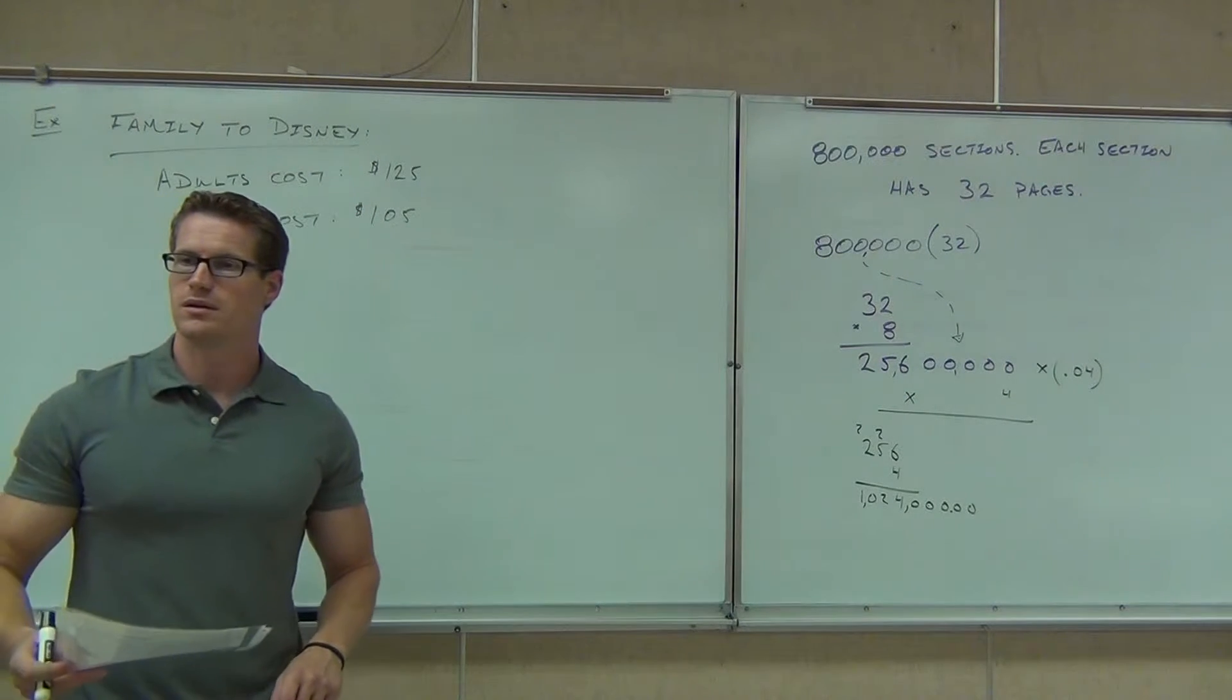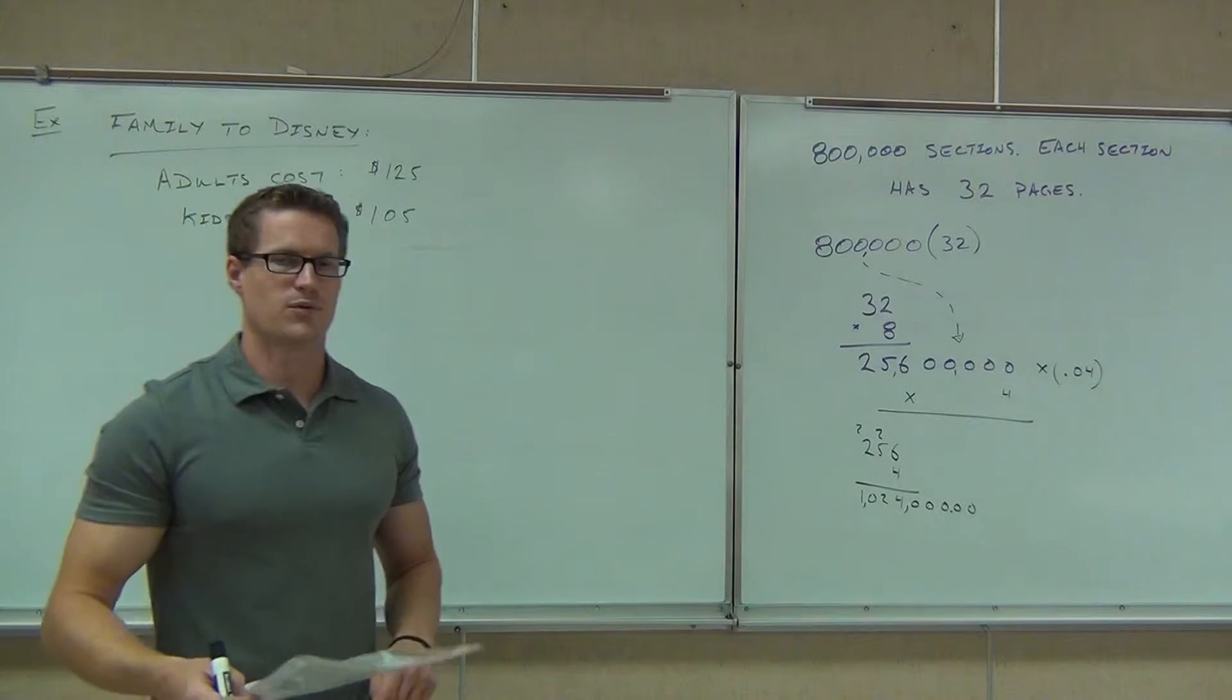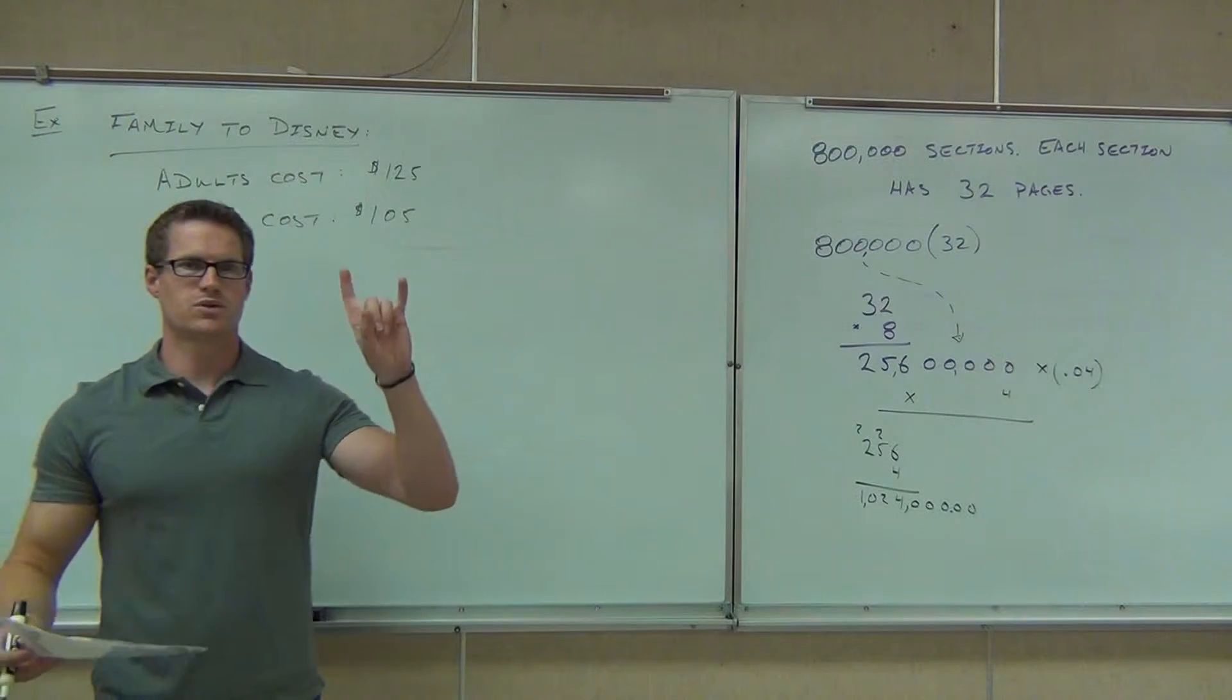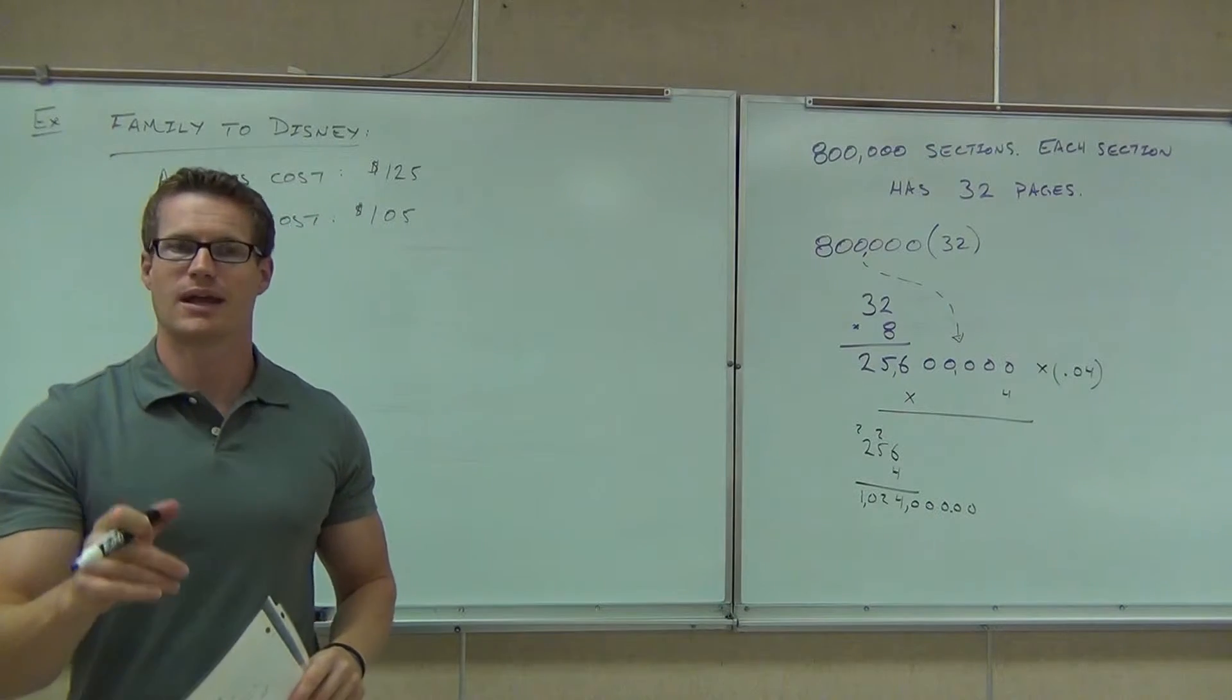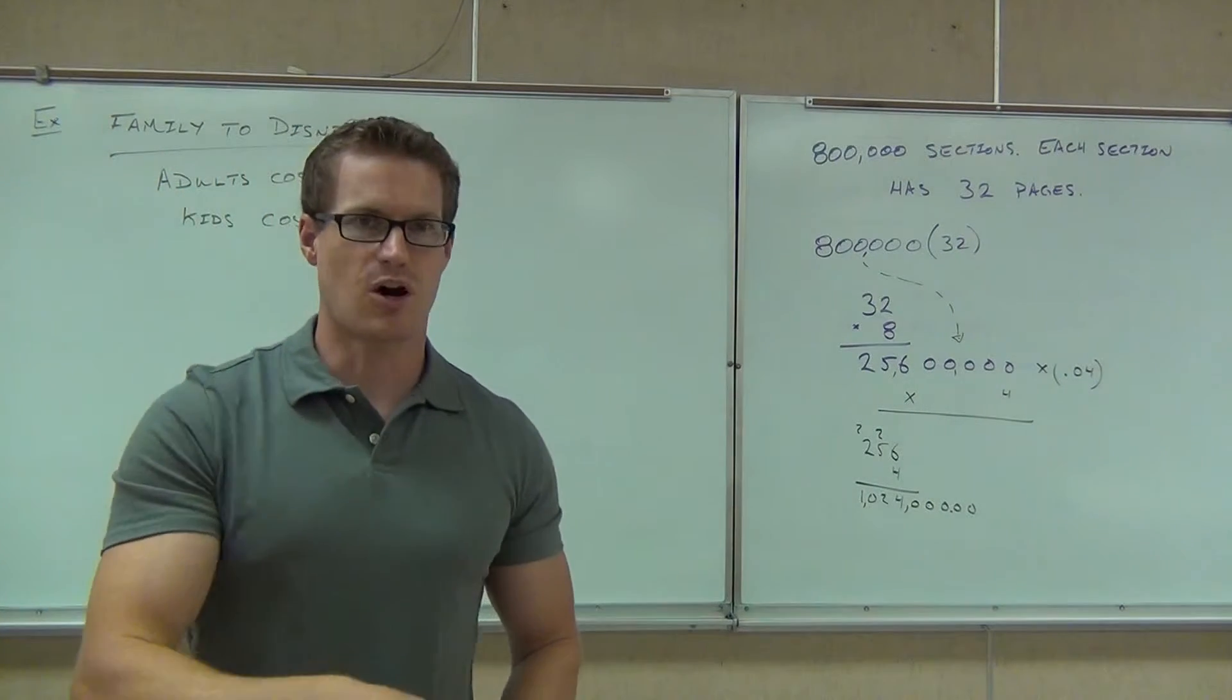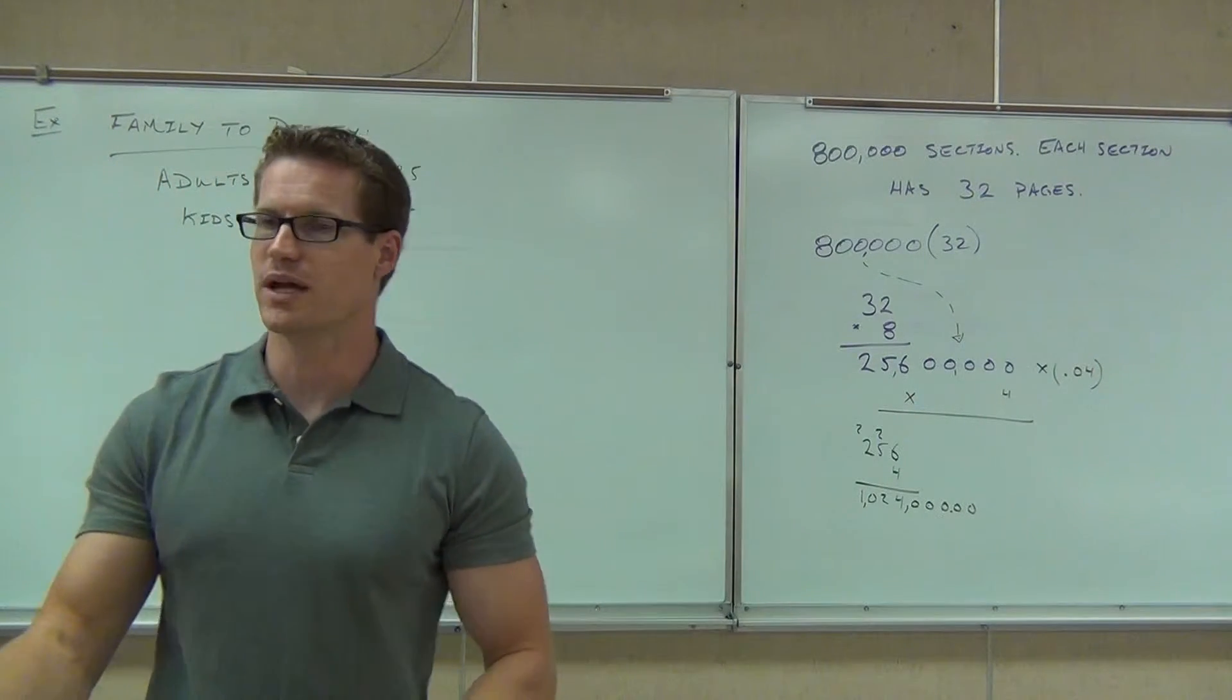How big's your family? Four. Let's make it family of five. We'll do two adults and three kids. So we're going to take two adults and three kids to Disneyland. Let's figure out how to solve this problem and figure out how much it's going to cost us for two days of magical fun.